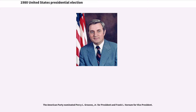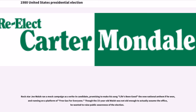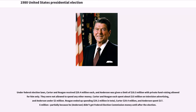The Communist Party USA ran Gus Hall for president and Angela Davis for vice president. The American Party nominated Percy L. Greaves Jr. for president and Frank L. Varnham for vice president. Rock star Joe Walsh ran a mock campaign as a write-in candidate, promising to make his song "Life's Been Good" the new national anthem if he won, and running on a platform of free gas for everyone. Though the 33-year-old Walsh was not old enough to actually assume the office, he wanted to raise public awareness of the election.